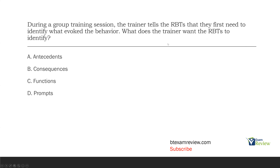Question three. During a group training session, the trainer tells the RBTs that they first need to identify what evoked the behavior. What does the trainer want the RBTs to identify? The key word here is evoked. Evoked essentially means this thing caused the response — it's not the same as the function or the maintaining consequence. What evoked the behavior is our antecedent. An antecedent happens right before the behavior, and the behavior happens in response to the antecedent. Then a consequence determines whether or not that behavior happens again in the future.